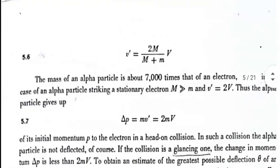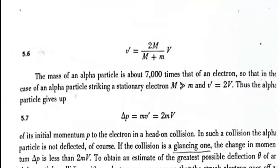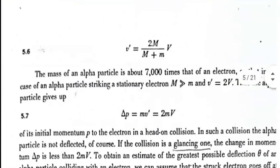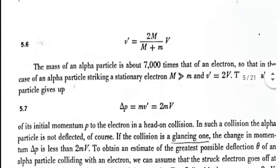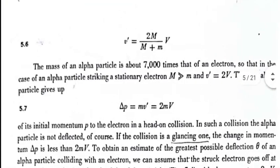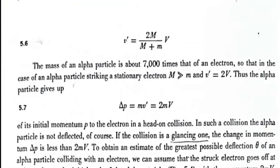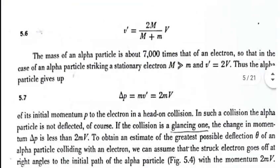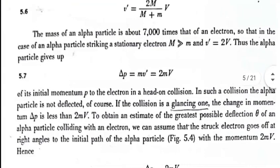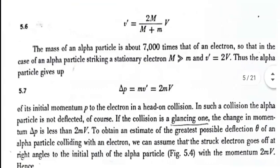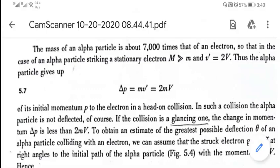Here v prime is 2m over M plus m times V. You get to know that the mass of alpha particle is 7,000 times heavier than the mass of electron. It means capital M is much, much greater than small m. So you have V prime from equation 5.6: 2m over capital M into V. The m's cancel, so V prime equals 2V. That's your answer.